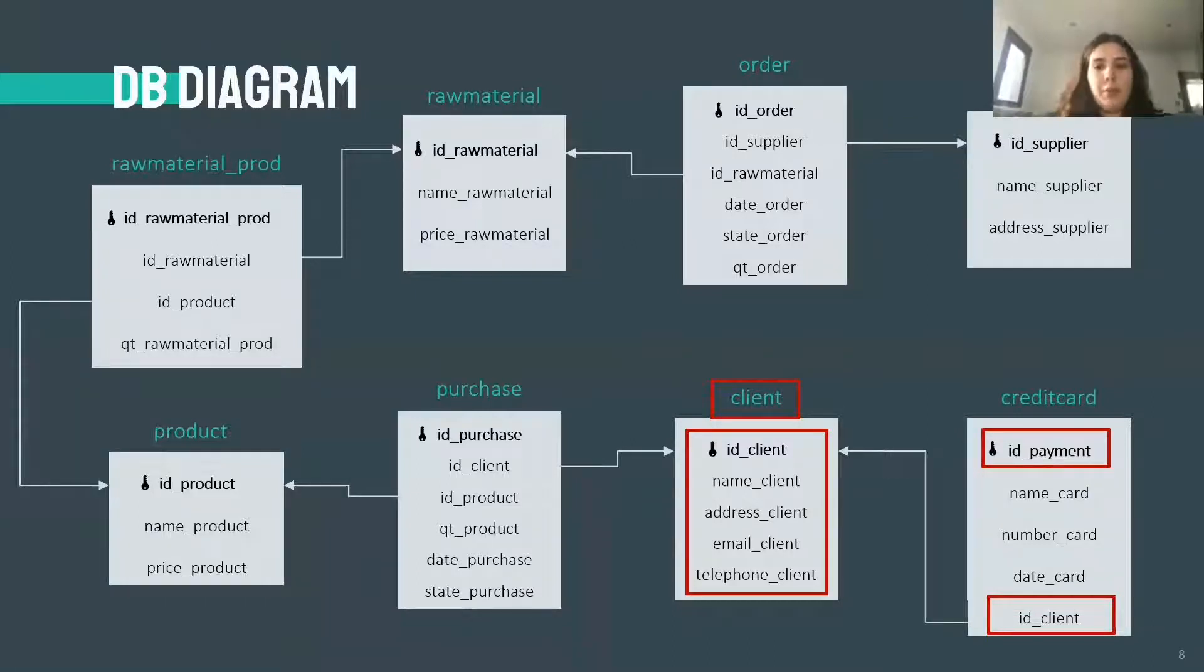Now I will proceed to explain in further detail the diagram. Caderino is a company that sells notebooks. Each one has a different ID number that identifies it, a selling price and each one is composed of different raw materials, which also have an ID number and a price.